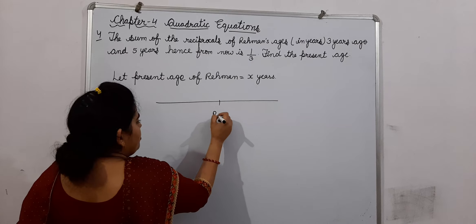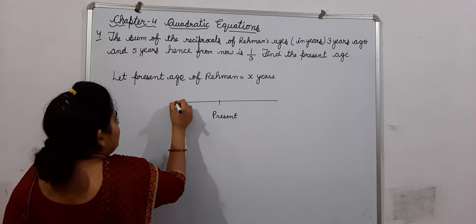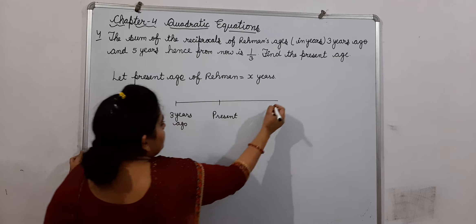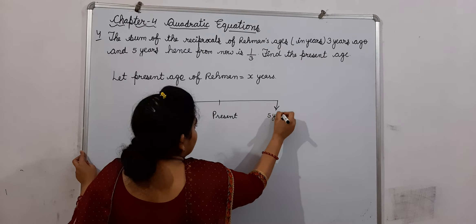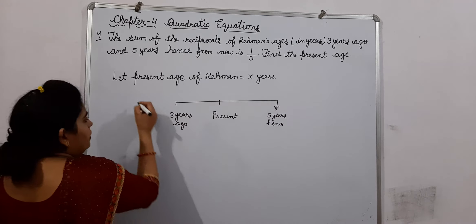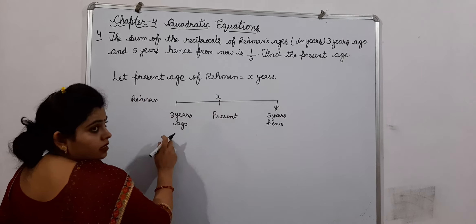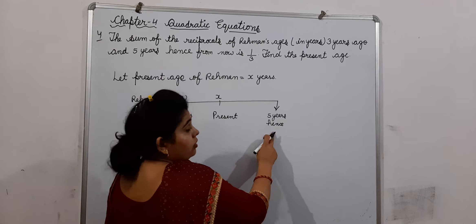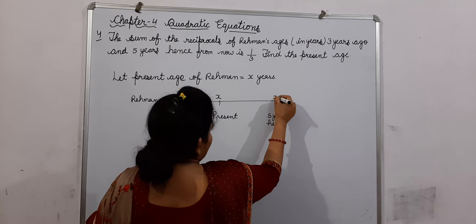Rehman's present age is X. So, 3 years ago his age was X minus 3, and after 5 years he will be X plus 5 years old.